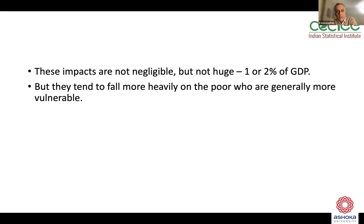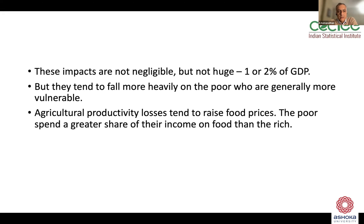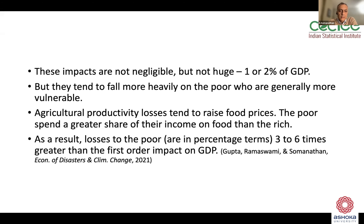There's another important issue: these impacts tend to fall more heavily on the poor, who are generally more vulnerable. There are fewer safety nets and fewer resources to cope with negative shocks. One long-run impact is that agricultural productivity losses tend to raise food prices because food supply is reduced, and the poor spend a greater share of income on food than the rich. As a result, losses to the poor in percentage terms are about three to six times greater than the first-order impact on GDP, depending on how open the Indian economy is to trade.